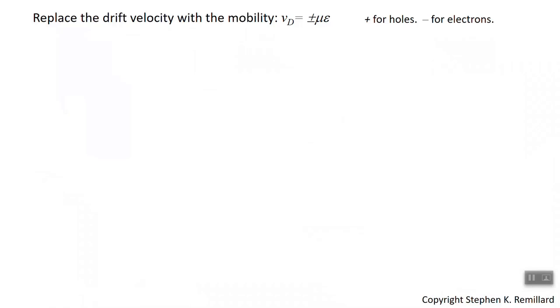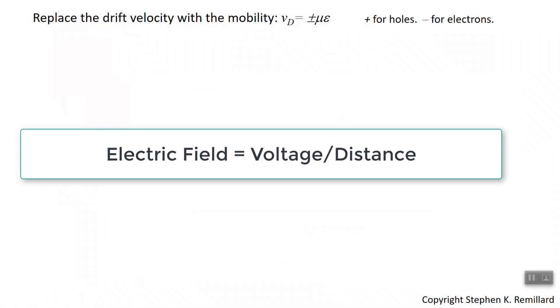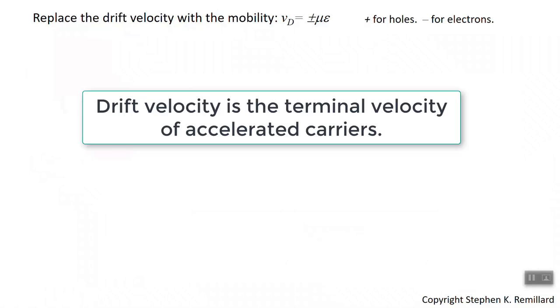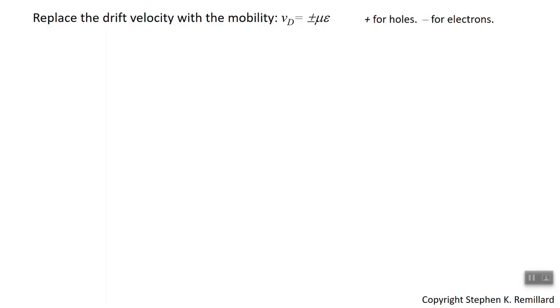Electric field is not too difficult to know because you can know voltage and the distance over which it's applied. Drift velocity is mobility — a constant of the material — times the electric field. It becomes clear that drift velocity is the terminal velocity of charge carriers after being accelerated under an electric field. The plus or minus is important: electrons accelerate opposite to the electric field, holes accelerate in the direction of the field. Since mobility is always positive, you need the plus sign for holes and minus for electrons.